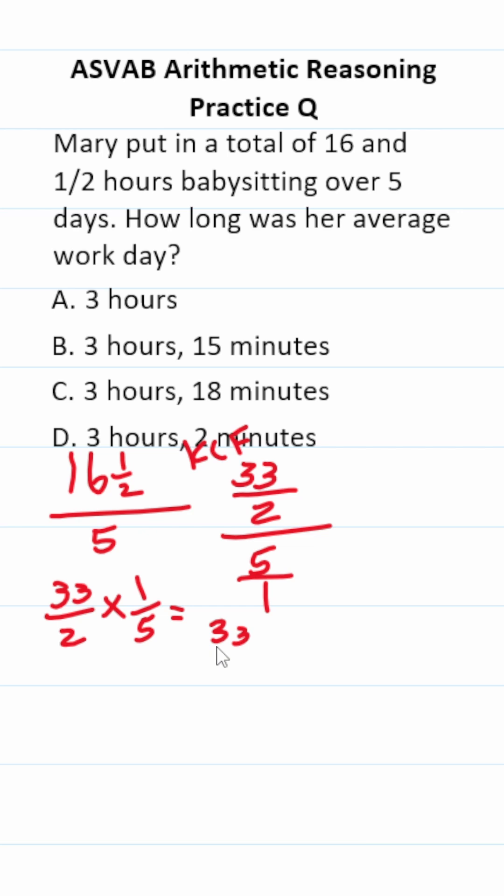This becomes 33 over 10, which you should be able to convert to a number like so. That's going to be three. 10 times three is 30 with three left over. So this is three and three tenths.